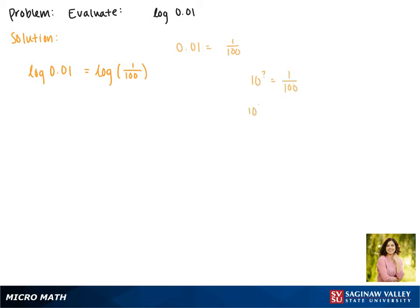Well we know that 10 squared is 100 and to put it in the denominator the power must be negative. So this tells us that 10 to the negative second power is 1 over 100, so this gives us negative 2.